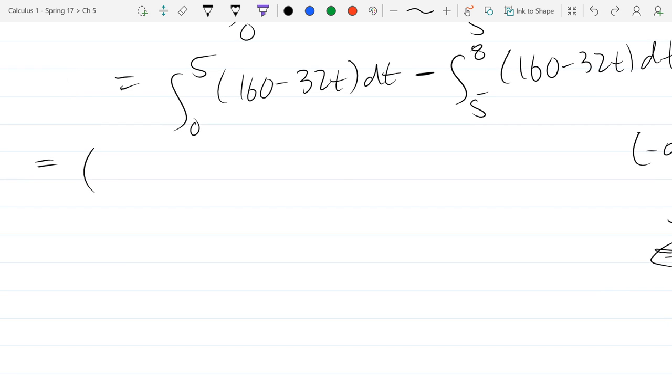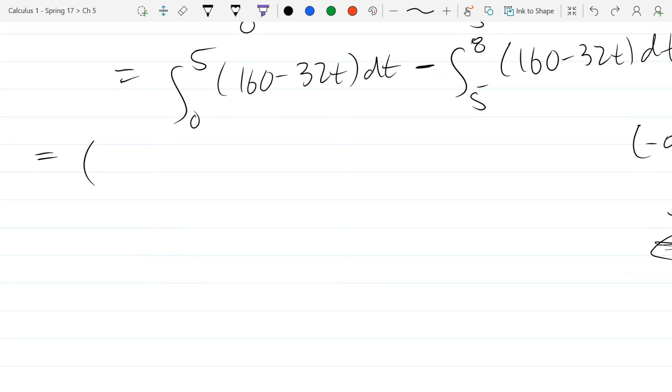Almost every problem you do is going to be an x derivative or antiderivative. Maybe 10% of the time it will be something different, and it usually is going to be t, the second most common variable. Occasionally it might be a dy, but that's even more rare than dt.